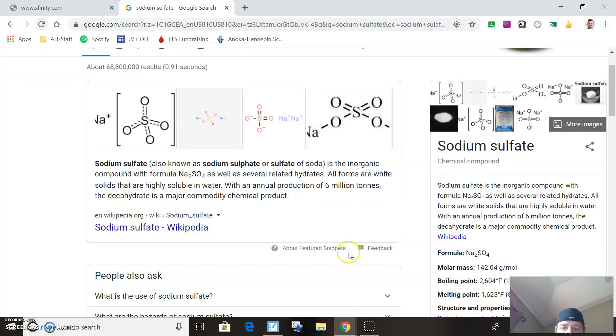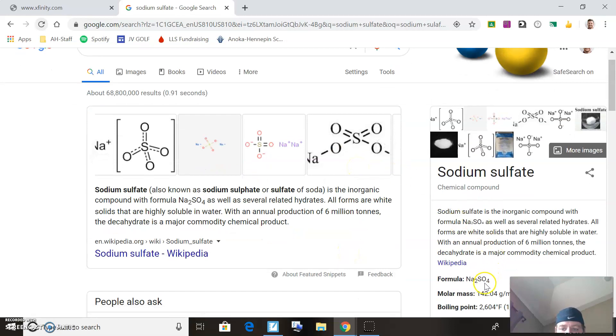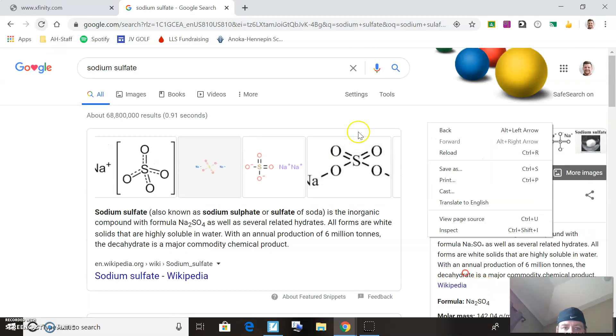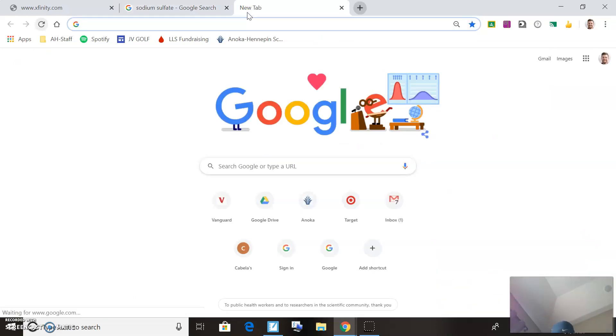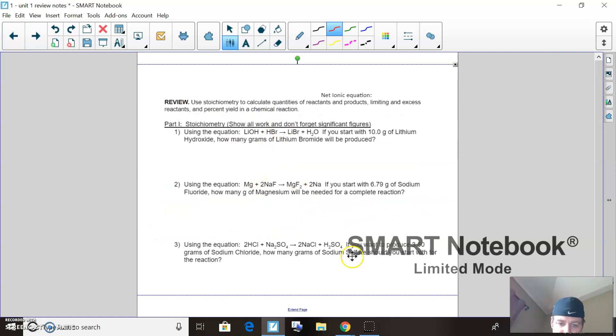For the record, you can always look up molar masses on Google every time—you just type in the compound and figure that one out. For the calculator, you can just multiply across the top and divide by the bottom, or if you have a nice TI-83, just use parentheses and punch in exactly what you see. If you set it up right, you'll be okay. There's some more problems in your worksheets—you can check your answers later.